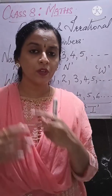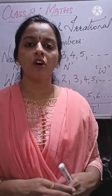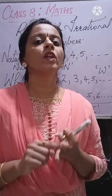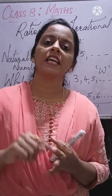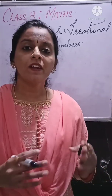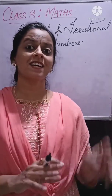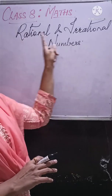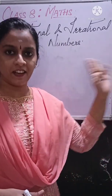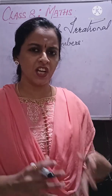So quickly, what did we revise? We just had a revision of types of numbers: Natural numbers, Whole numbers, and Integers. Now let us come into the main topic which is Rational Numbers. First we will discuss rational numbers; later on we will take irrational numbers. What are rational numbers?